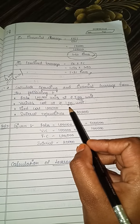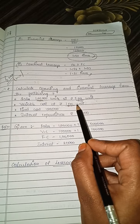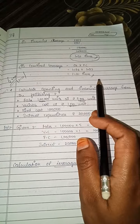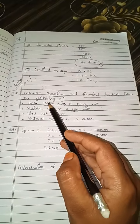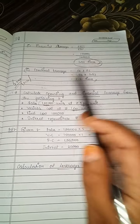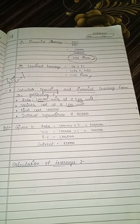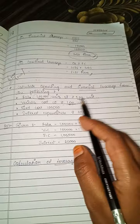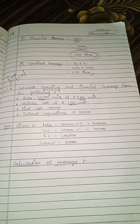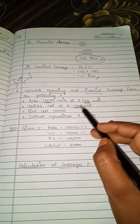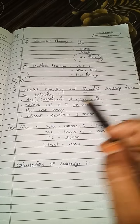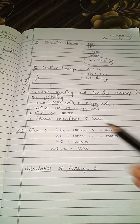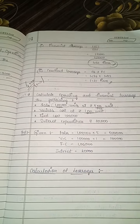Next we have variable cost at rupees 1 per unit. As I said, sales and variable cost will have a direct relationship — since sales is 1 lakh units, variable cost is also applied to the same 1 lakh units. So variable cost is at rupees 1 per unit. Next we have fixed cost of 1 lakh and interest expenditure of 20,000, given directly.